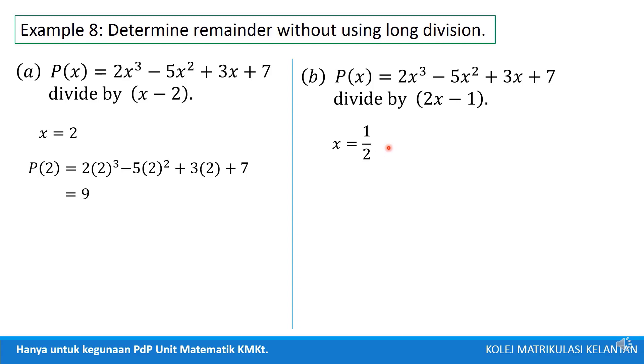So we substitute into polynomial, then we get the constant 15 over 2. So this is the remainder when divided by 2x minus 1.